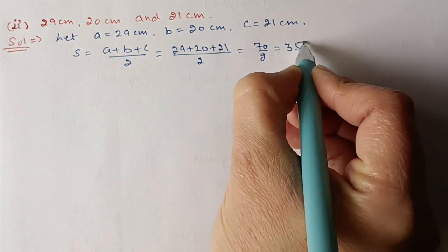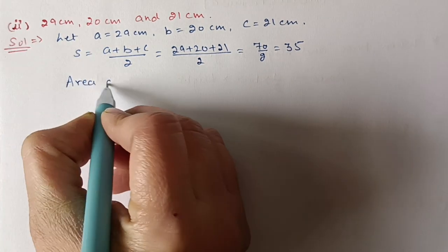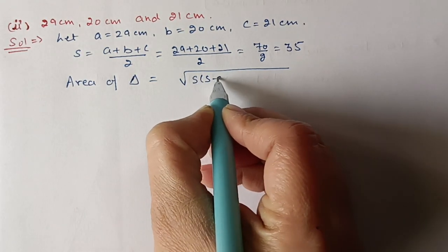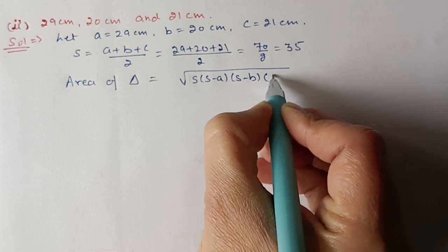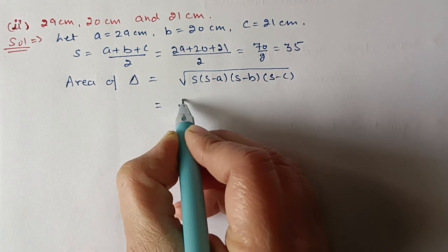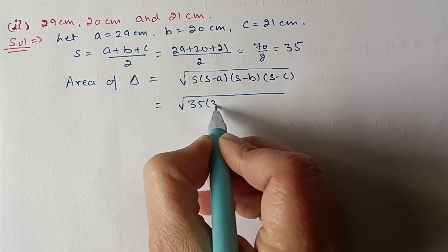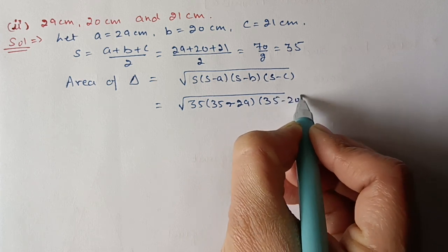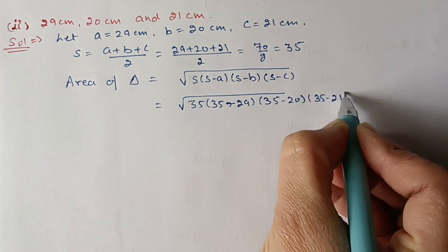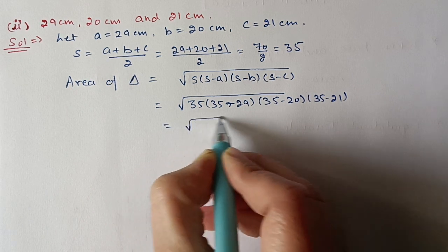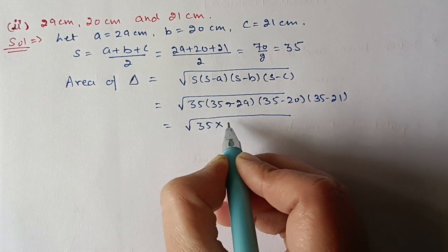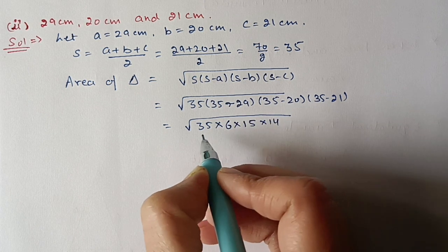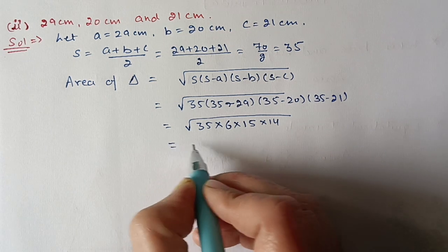Area = √[s(s−a)(s−b)(s−c)] = √[35 × (35−29) × (35−20) × (35−21)] = √[35 × 6 × 15 × 14]. Instead of multiplying directly, we do prime factorization and pair the factors.